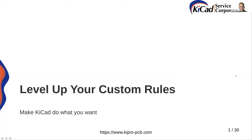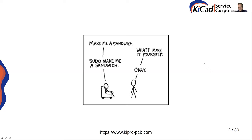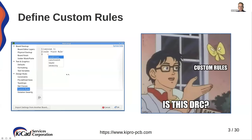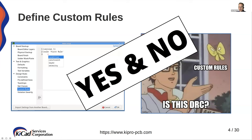To begin: custom rules. If KiCAD doesn't let you do it by itself, you should write a rule and tell KiCAD what you want to do, and it will follow you. What are these custom rules? These are DRC. On the left here, you see the beginnings of what a rule could look like. A rule might have a condition or a constraint, specify a layer or severity. This is maybe DRC, but maybe not — because as I said, we can sometimes modify the actual behavior of what we see in KiCAD using these custom rules.